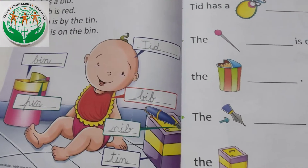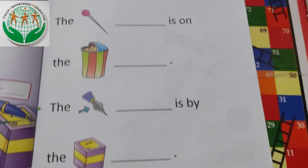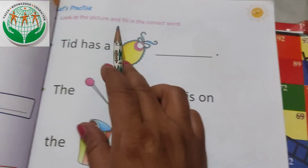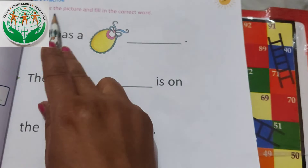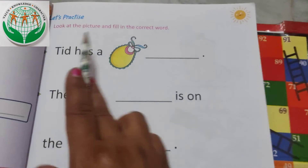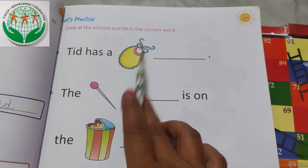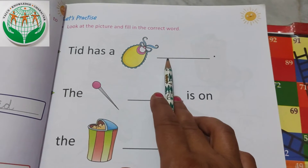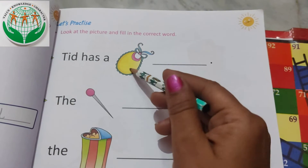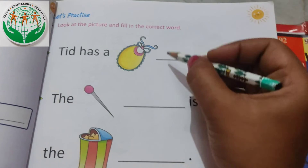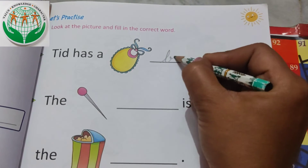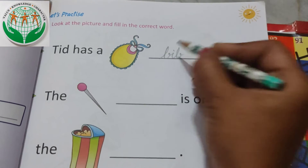Now kids, page number 67. Now we are going to do page number 67. Look at the picture and fill the correct word. Picture ko dhyan se phechanna hai, aur yahaan par correct word likhna hai. Tid has a — what is this? Bib. Very good. Tid has a bib: B-I-B.